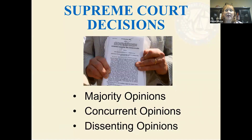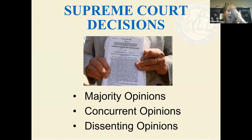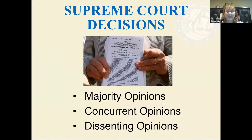Appellate decisions are made by majority. When you look at the panel of judges — usually an odd number, seven or nine — whatever the majority decides is the majority opinion. Justices who disagree can write dissenting opinions. If a justice agrees with the final decision but for different reasons, they write a concurring opinion.